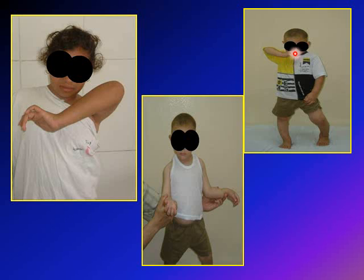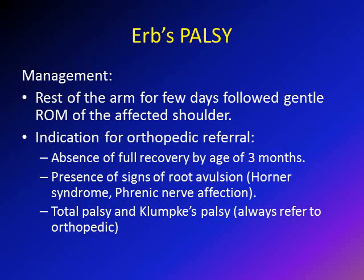For management of Erb's palsy in newborns: rest the arm for a few days — either by applying an ACE wrap over the arm and elbow or using a safety clip connecting the sleeve to the child's gown — followed by gentle range of motion exercises of the affected shoulder after about one week. There is no need for electrical stimulation in these children.